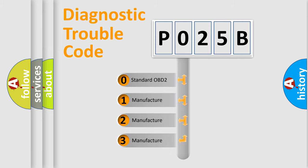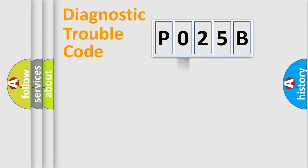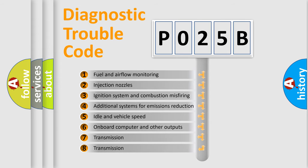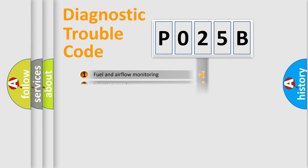If the second character is expressed as zero, it is a standardized error. In the case of numbers 1, 2, or 3, it is a more specific expression of the car-specific error. The third character specifies a subset of errors. The distribution shown is valid only for the standardized DTC code.